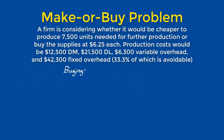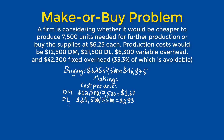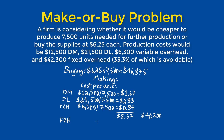Right away, we have enough information to determine that the cost of buying the supplies will be $46,875. To determine whether making it by themselves is cheaper, the managers will determine the relevant cost per unit. The direct material relevant cost per unit is $1.67, the direct labor relevant cost per unit is $2.83, and the variable overhead relevant cost per unit is $0.84, giving a total relevant cost per unit of $5.37 and a total cost of production of $40,300.